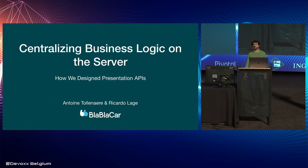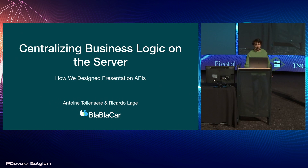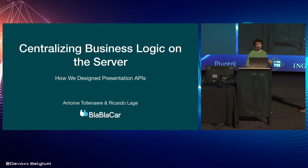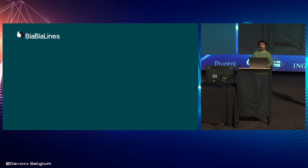BlaBlaCar is currently focusing its product on features that require a lot of technical challenges. In this talk, we're going to talk about API design in the context of BlaBlaLines, which is a product that BlaBlaCar is building to focus exclusively on commuting — going from home to work.